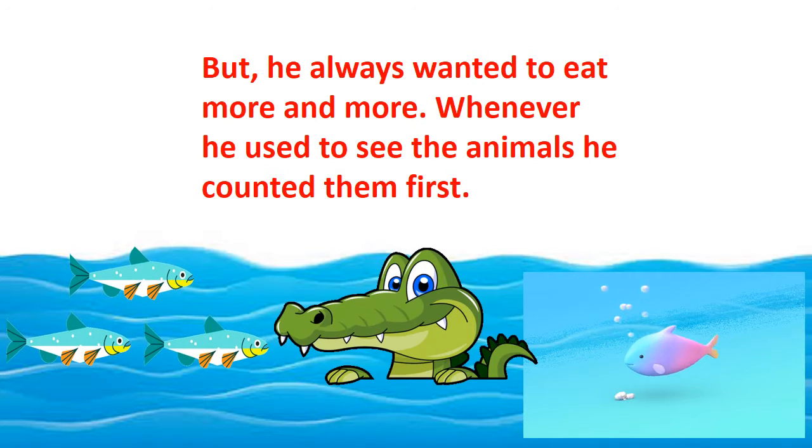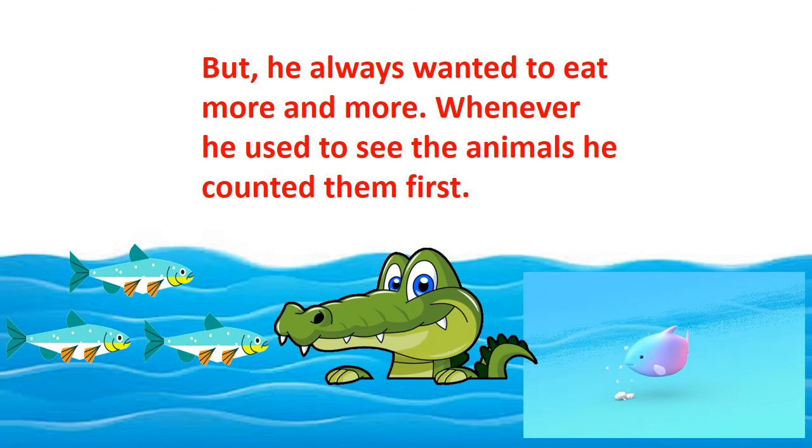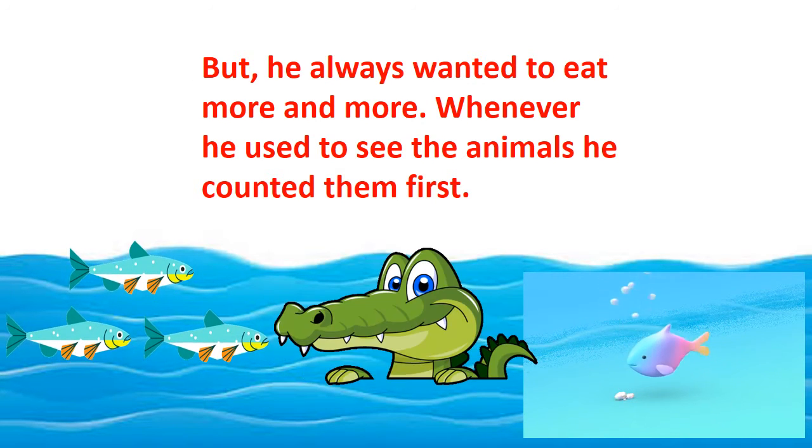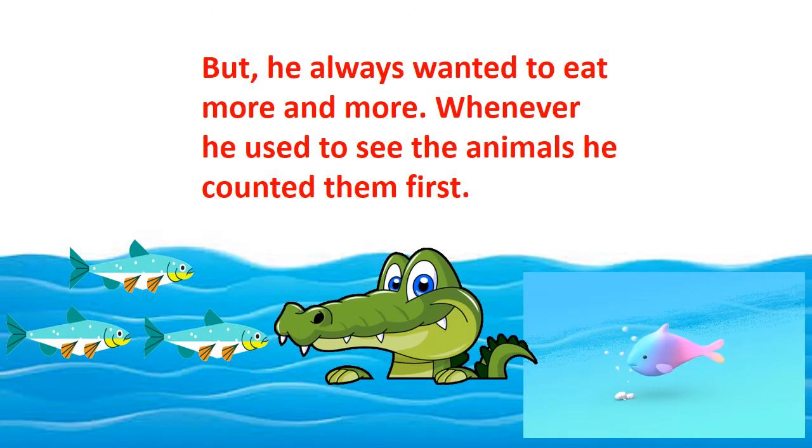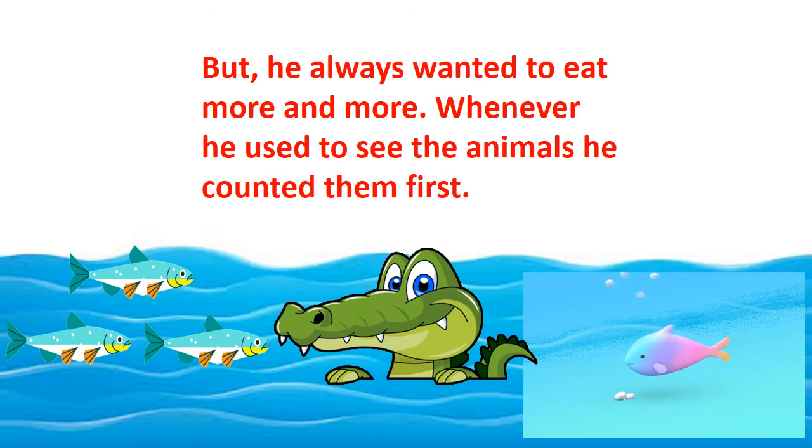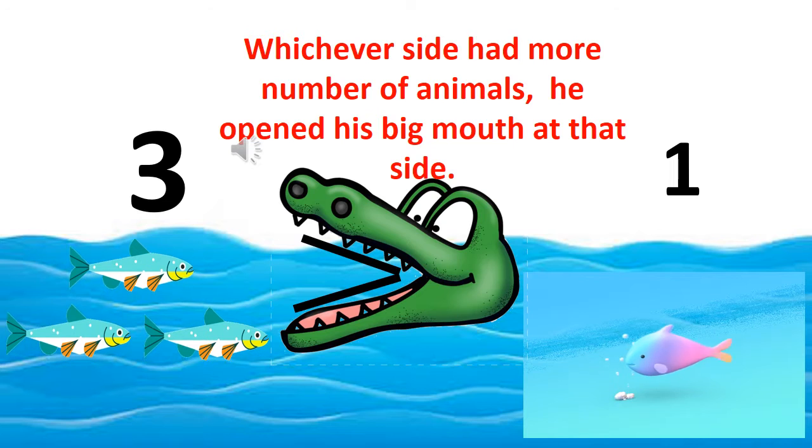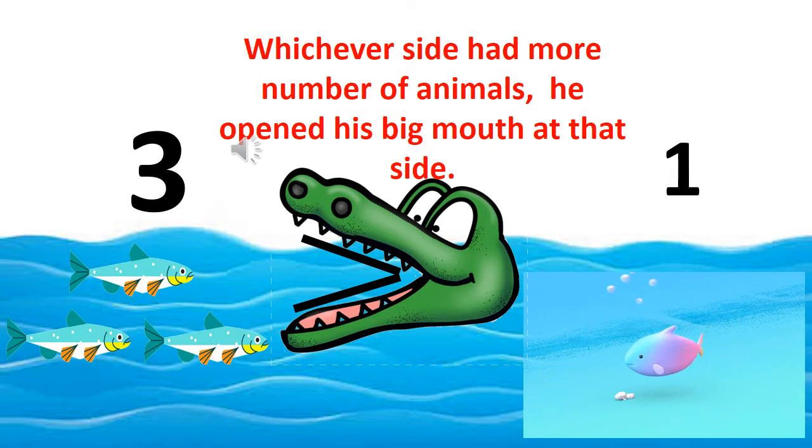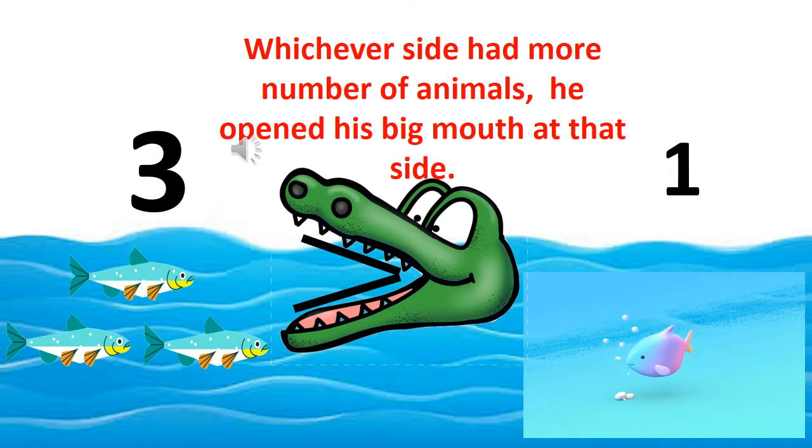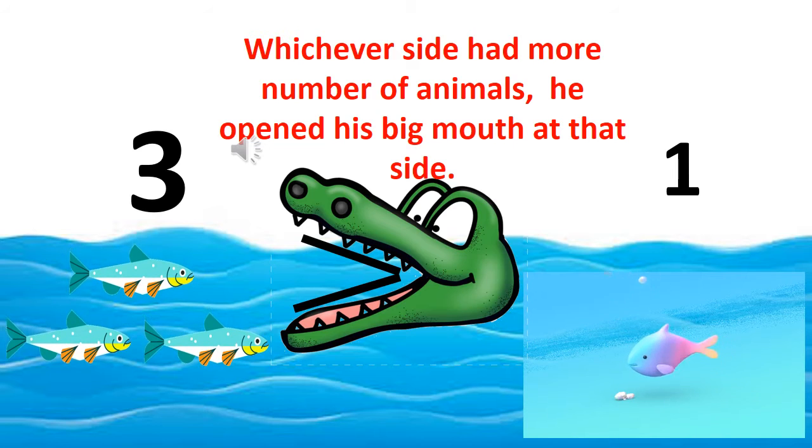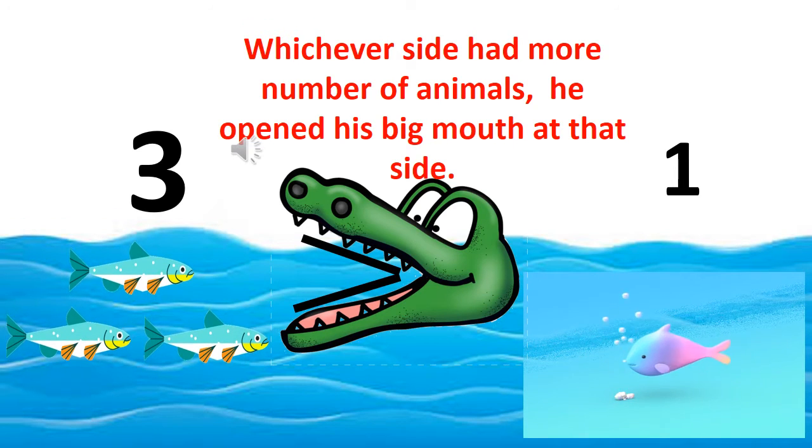But he always wanted to eat more and more. Whenever he used to see the animals, he counted them first. Whichever side had more number of animals, he opened his big mouth and gobbled all the animals up.